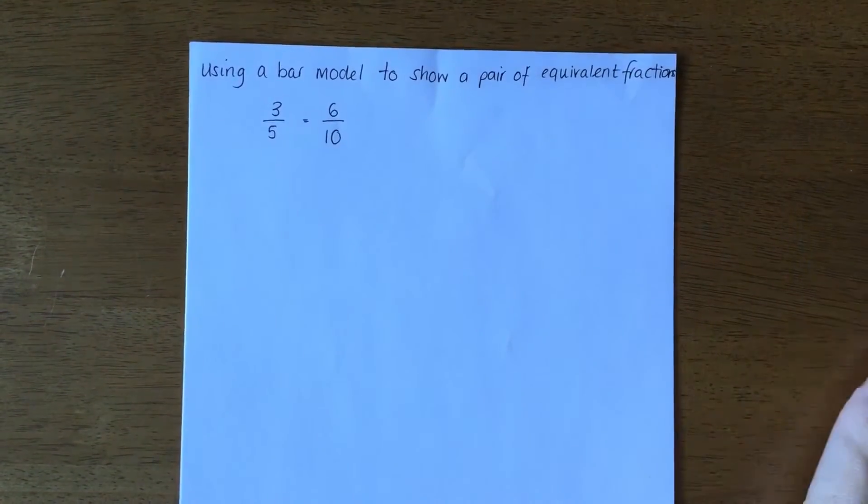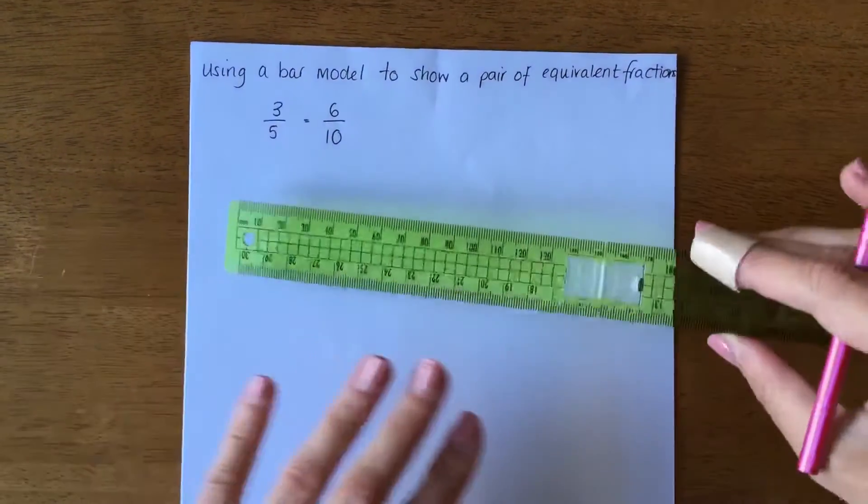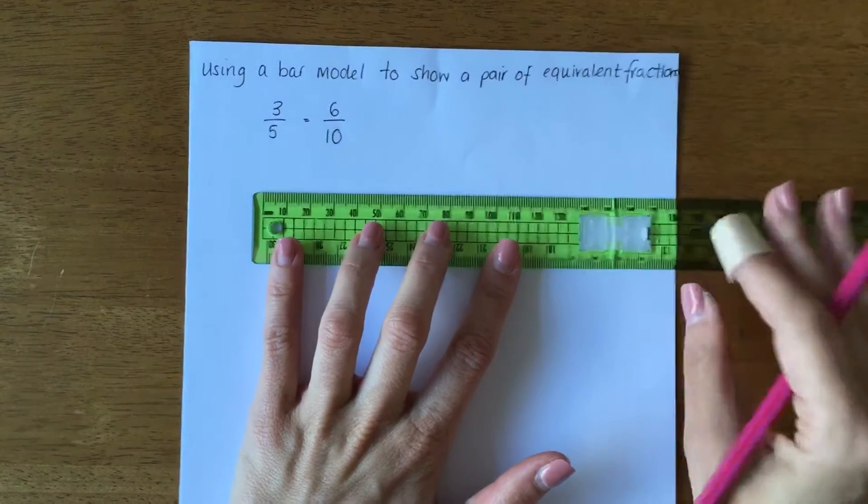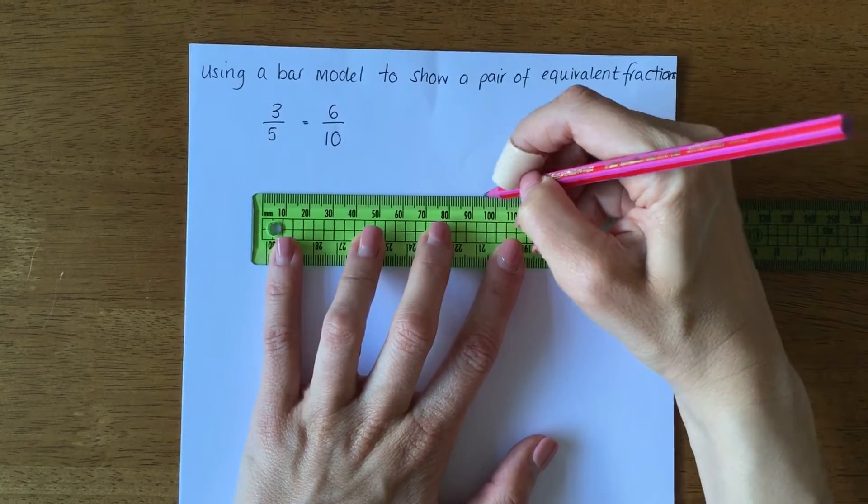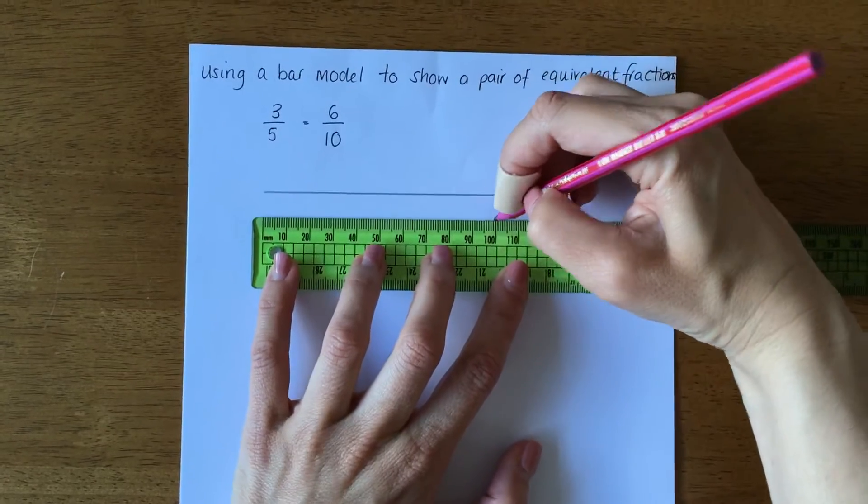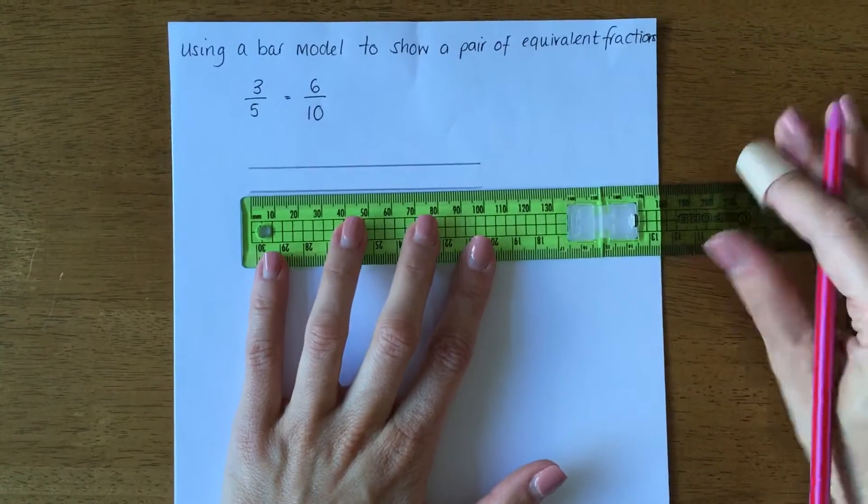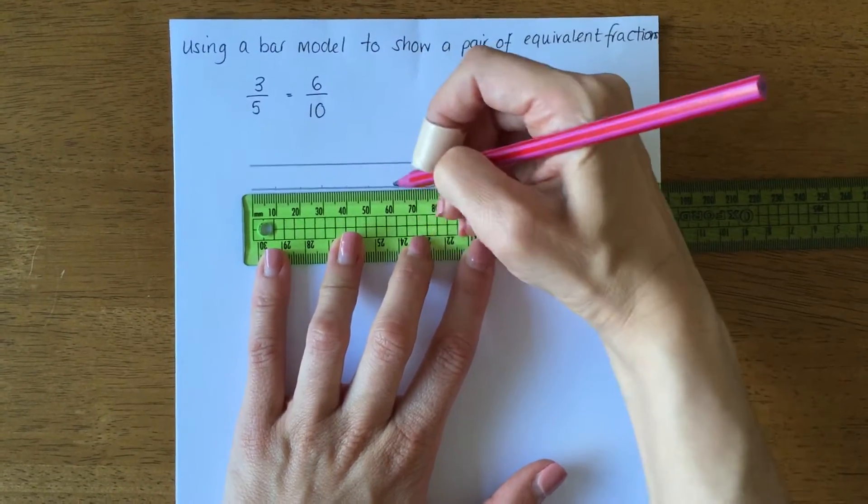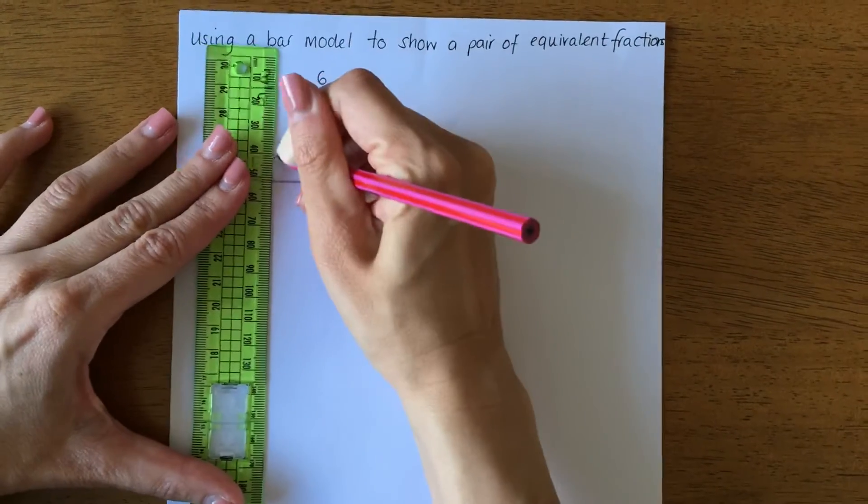I'm going to pick the biggest denominator. Remember, the denominator is the bottom number, and the biggest number is 10. So I'm going to draw my bar model 10 centimeters so I can fit 10 parts in it. Here is my bar of 10. What I need to do is mark each centimeter and then draw the boxes.